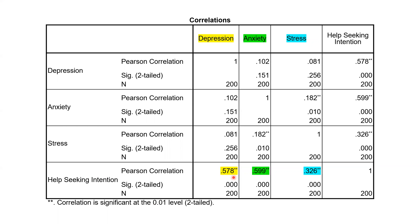What about the relationship between anxiety and help-seeking? I highlighted it in green to make it easier to find the correlation coefficient R. This is where the two variables intersect: help-seeking intention is in the last row, and anxiety is in the second column of the matrix. Based on this coefficient and its p-value, there is a significant positive relationship between anxiety and help-seeking intention, p < 0.001. The more anxious you are, the more likely you are to seek help from a mental health professional.